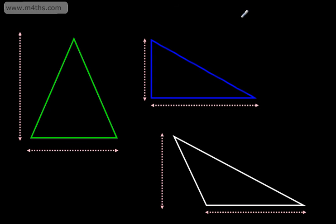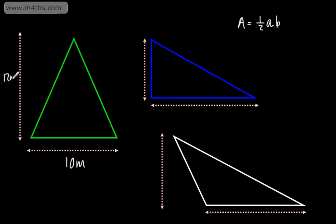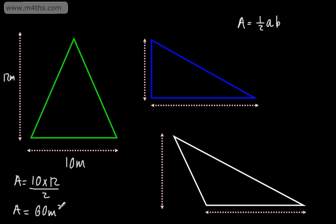We can say the area is going to be 1/2 AB. All this is saying is you times the base by the height and divide by 2. For example, if this was 10 meters and this was 12 meters, we can say that the area is going to be 10 times 12 divided by 2. So the area gives us 60 meters squared.